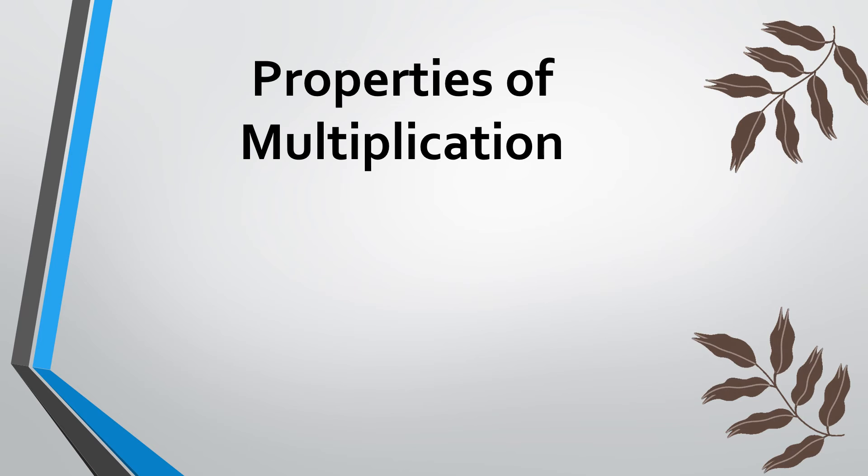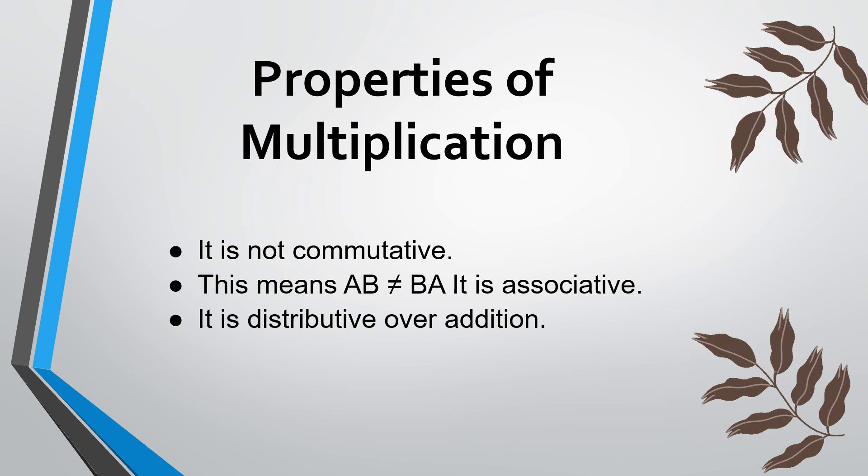Properties of multiplication. Matrix multiplication has the following important properties of which one may take advantage in the course of computational works. First, it is not commutative. This means AB is not equal to BA. It is associative. It is distributive over addition.